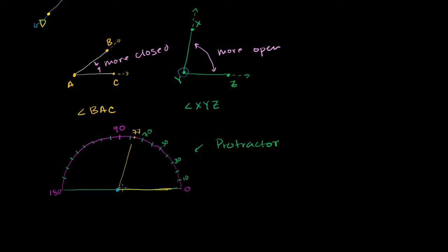So when we measure an angle, we could say the measure of angle XYZ is equal to 77. Sometimes they'll just say angle XYZ is equal to 77, but the more formal notation is the measure of angle XYZ equals 77. Each of these little sections we call degrees, so it's equal to 77 degrees. It's written with a little symbol, the same way you would write degrees for temperature. You could write 77 degrees like that, or write out the word.